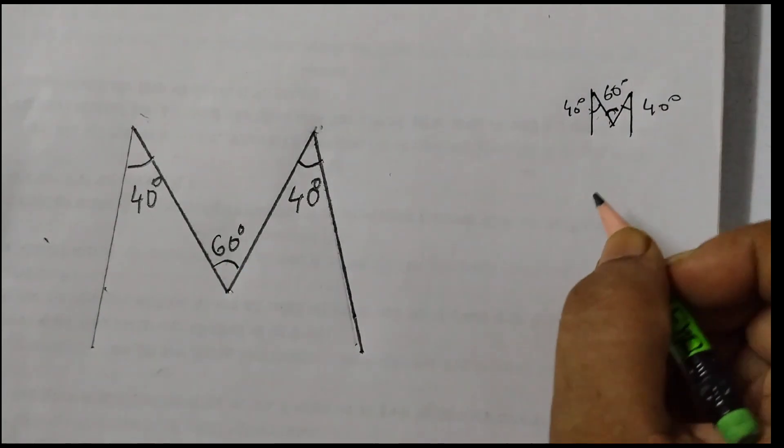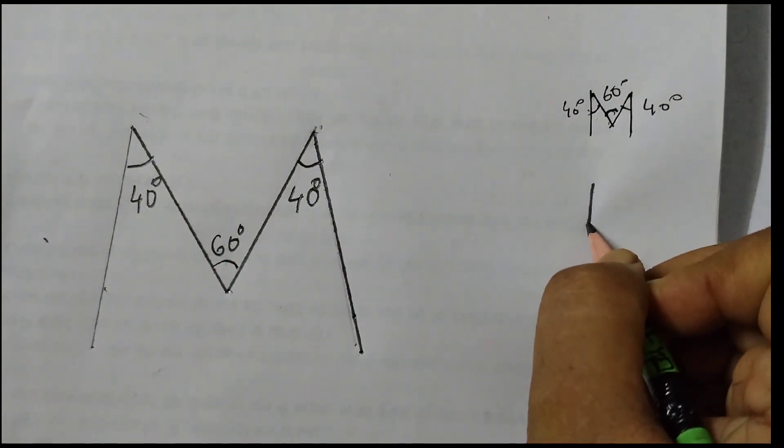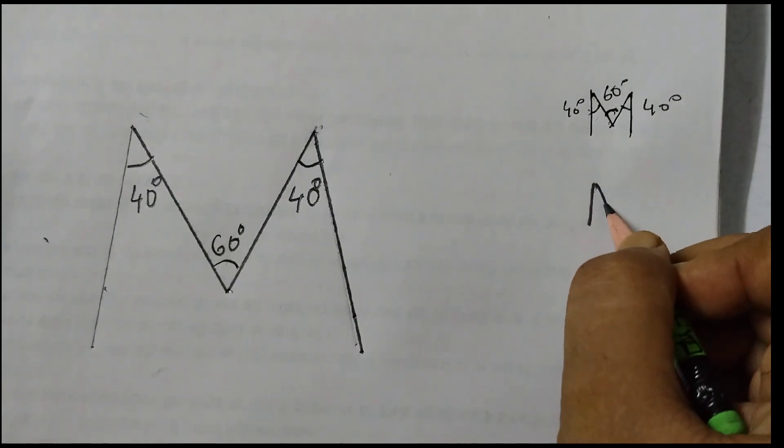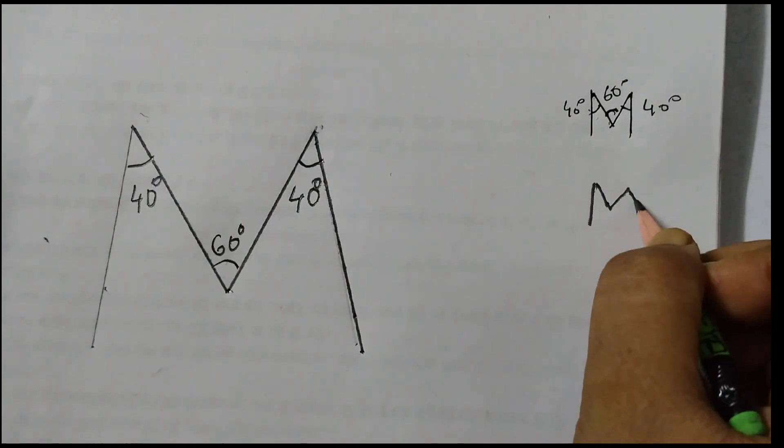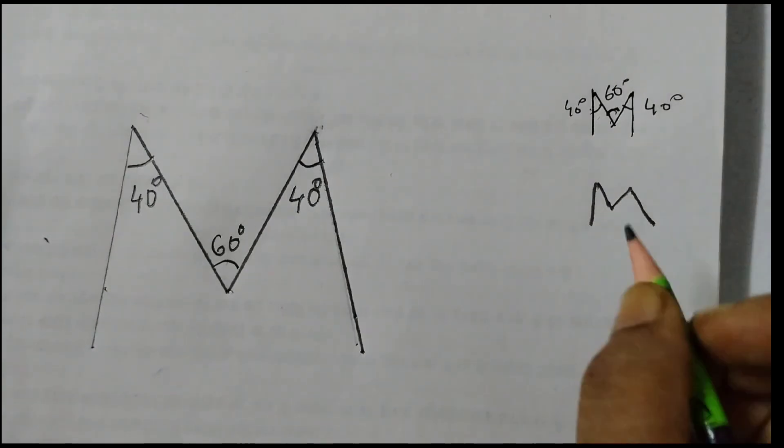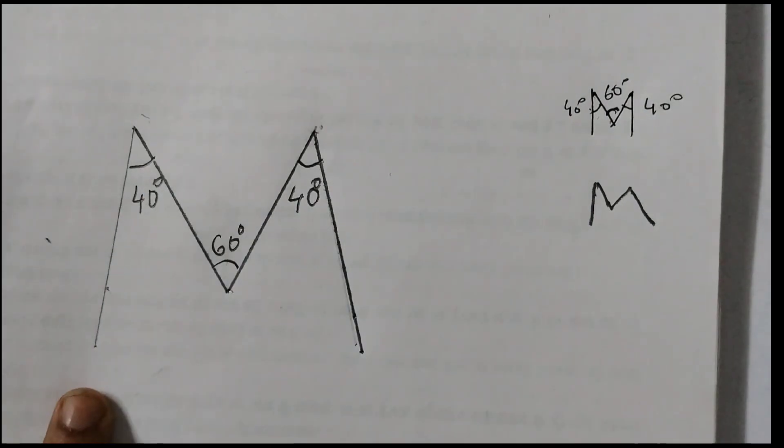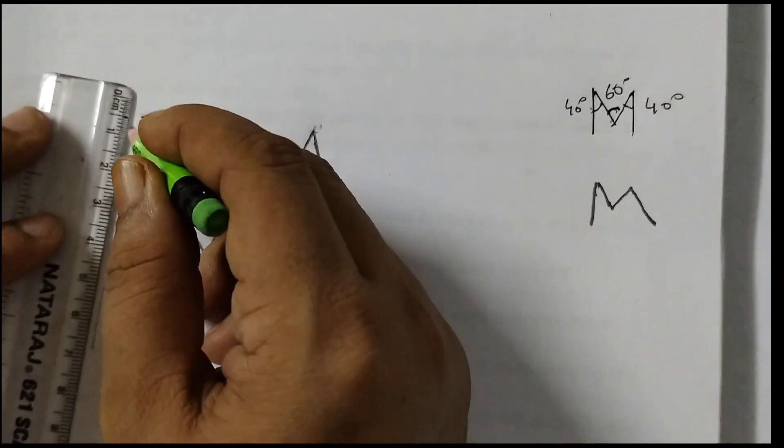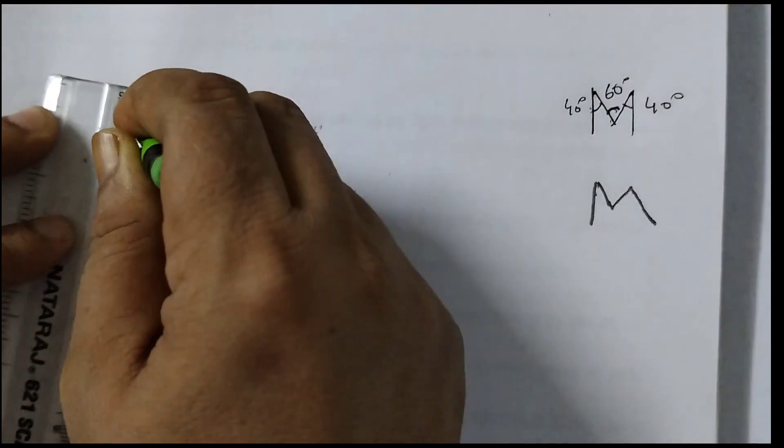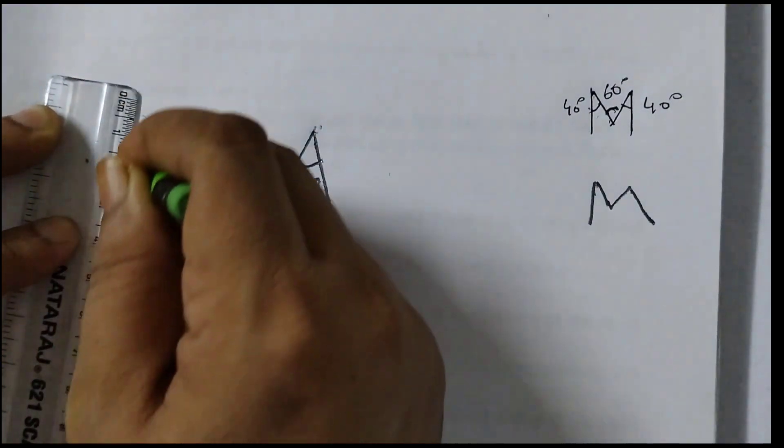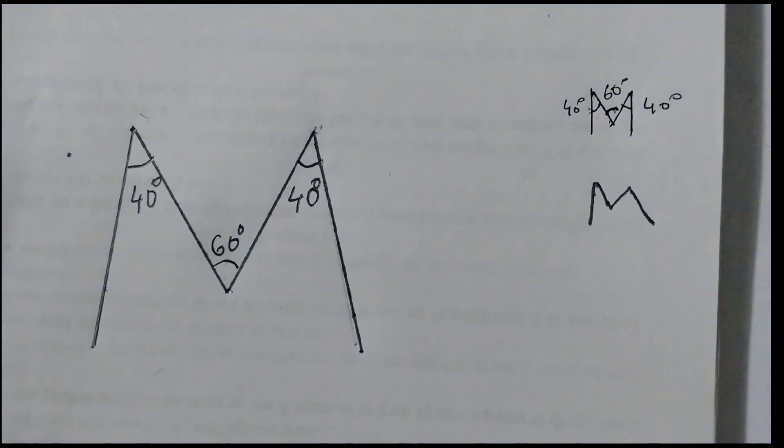Now if you take this line in the very beginning as a straight line, what would happen is when you draw M, this line would go somewhat like this. So when you are starting, take this line little bit tilted, so you would get somewhat like this. And we can just darken it as well here. Let's darken this. I hope this is clear to you. Thank you.